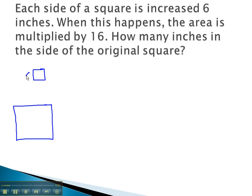We don't know the side of the square, but each side of a square should be the same, so let's make them both x. Each side is going to be increased by 6 inches, so now the two other sides are x plus 6.